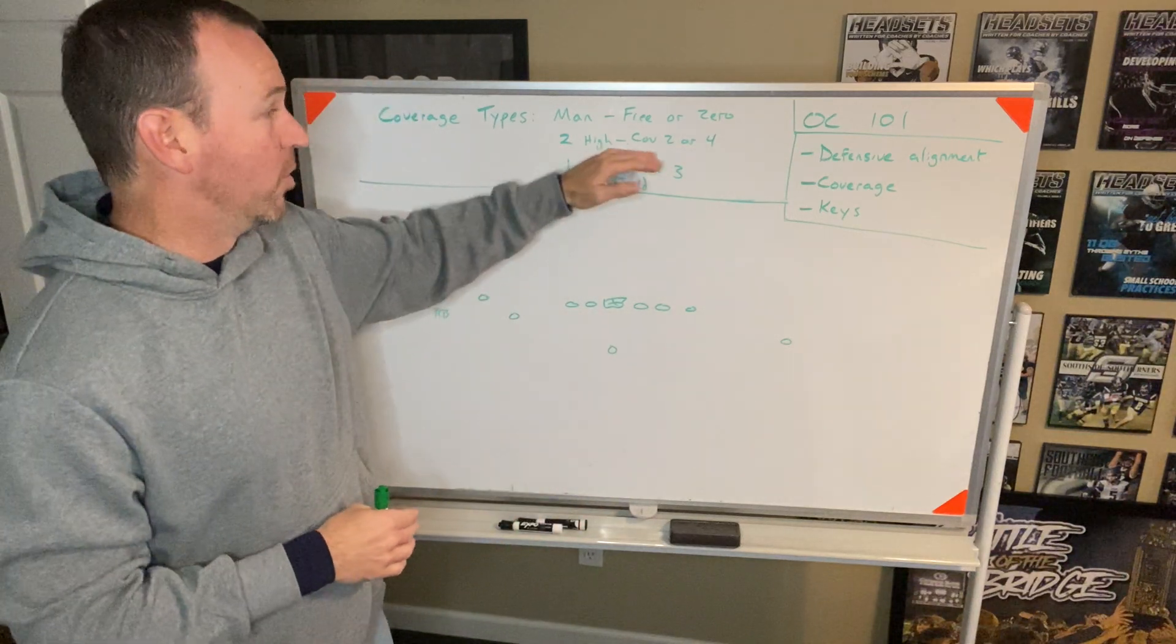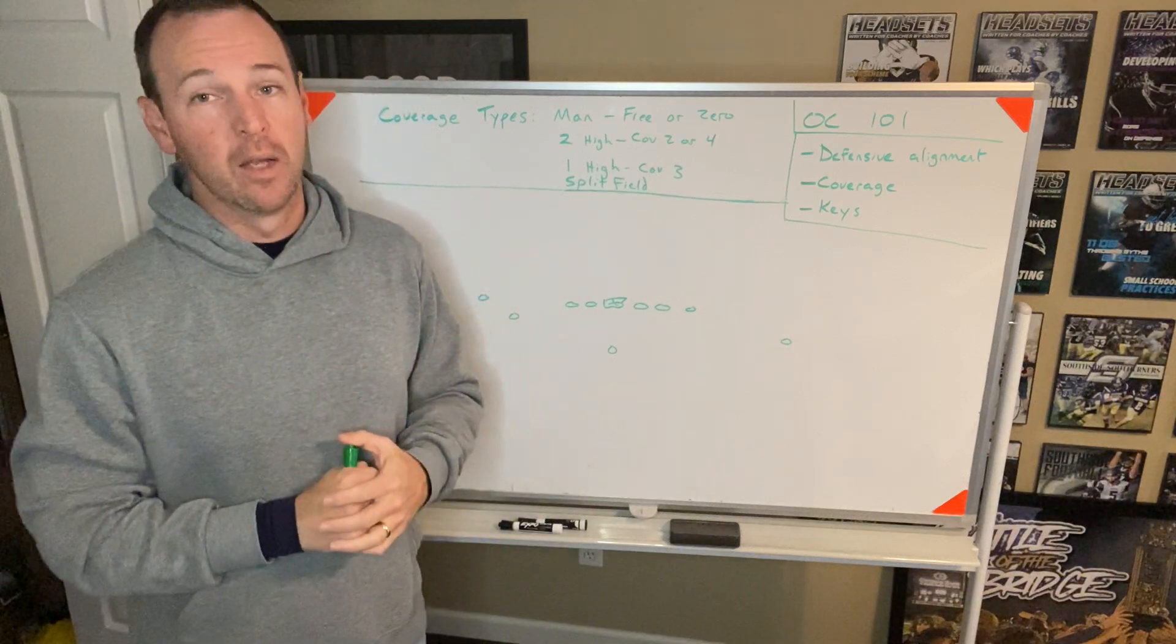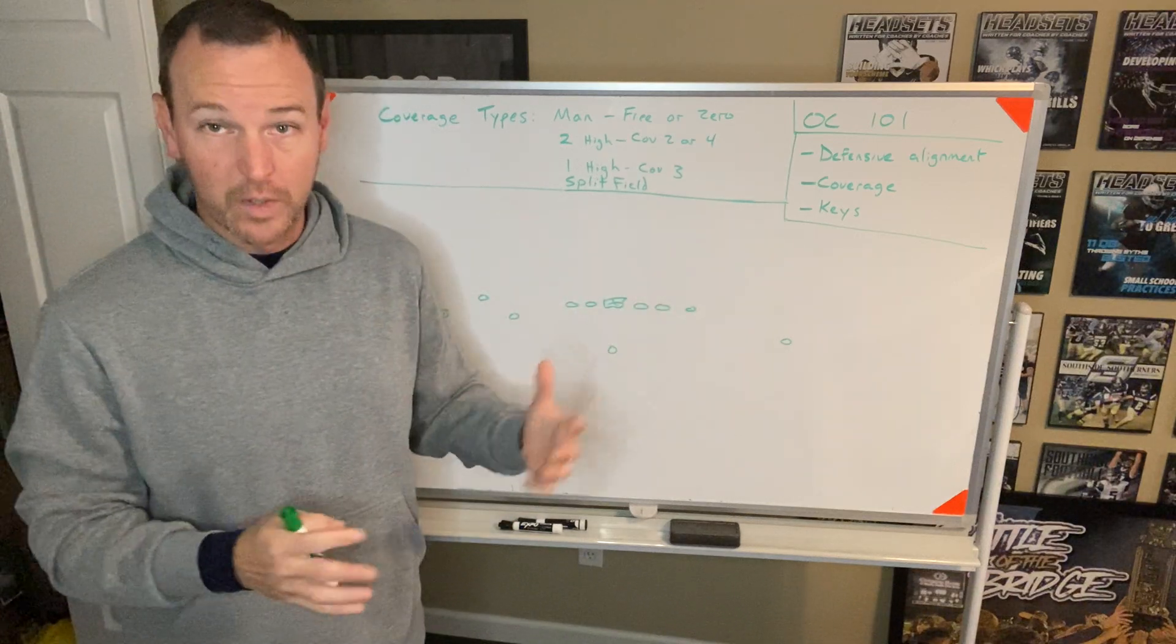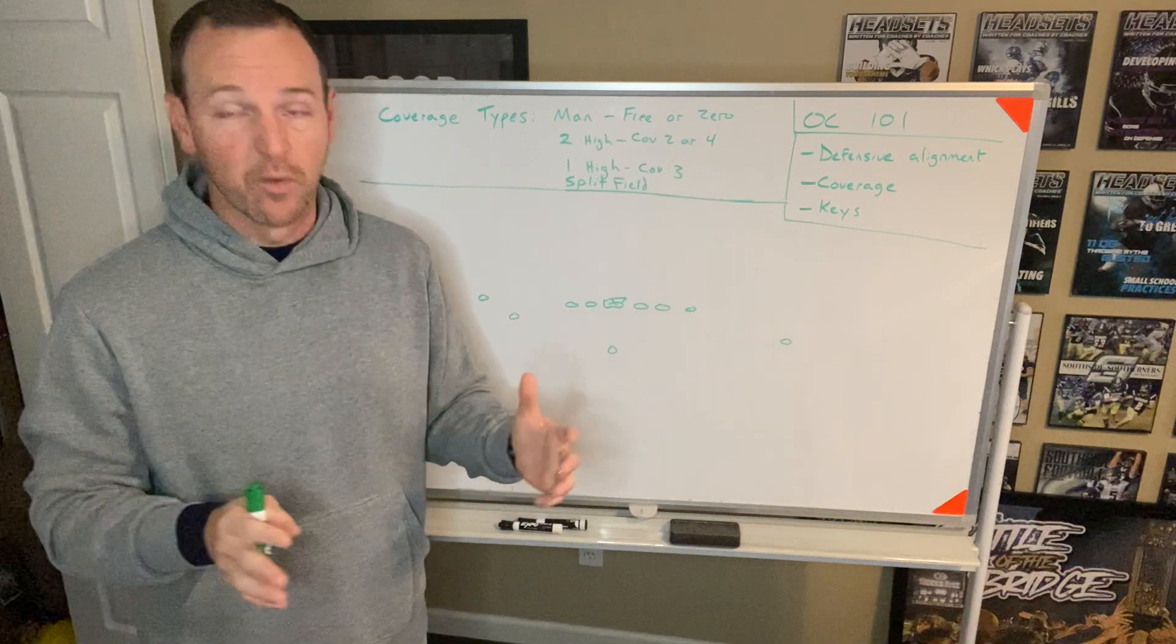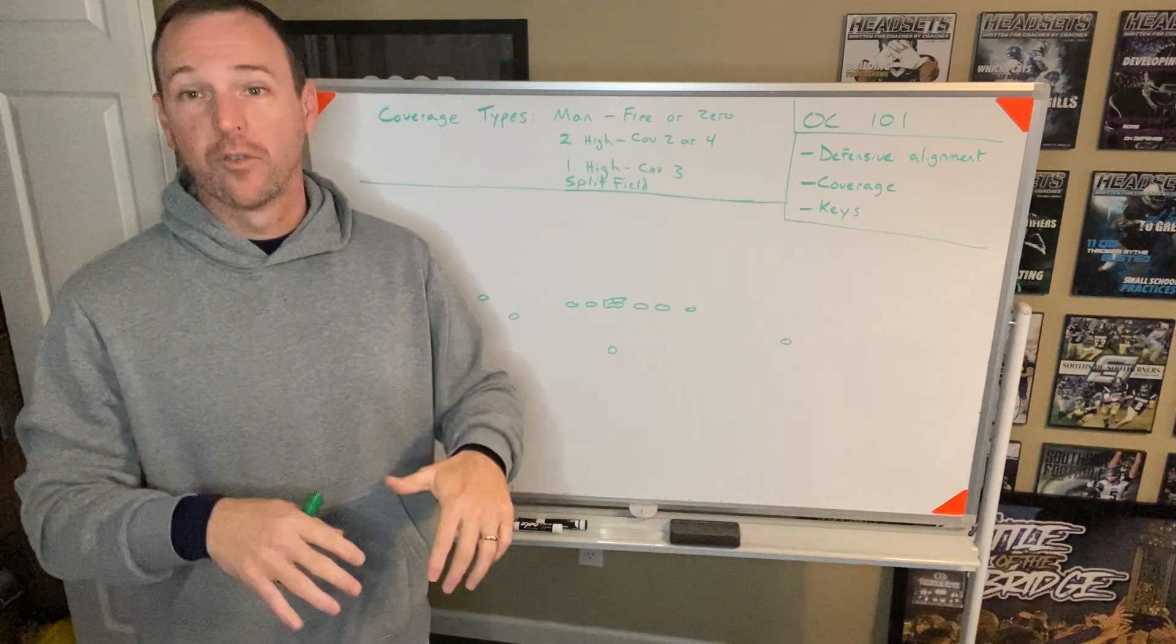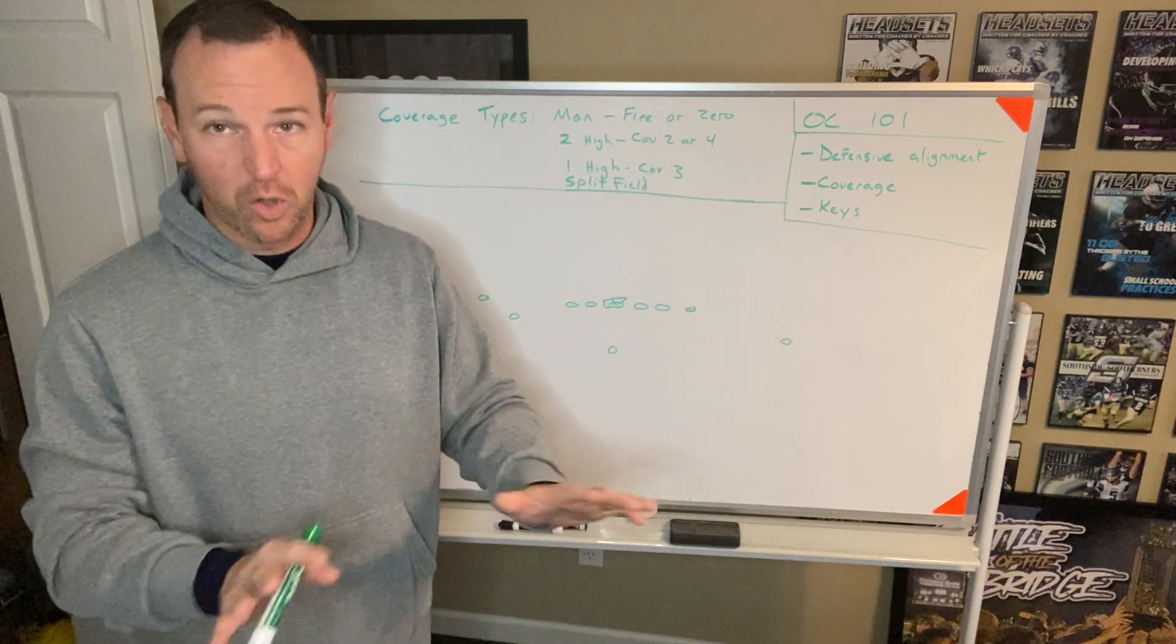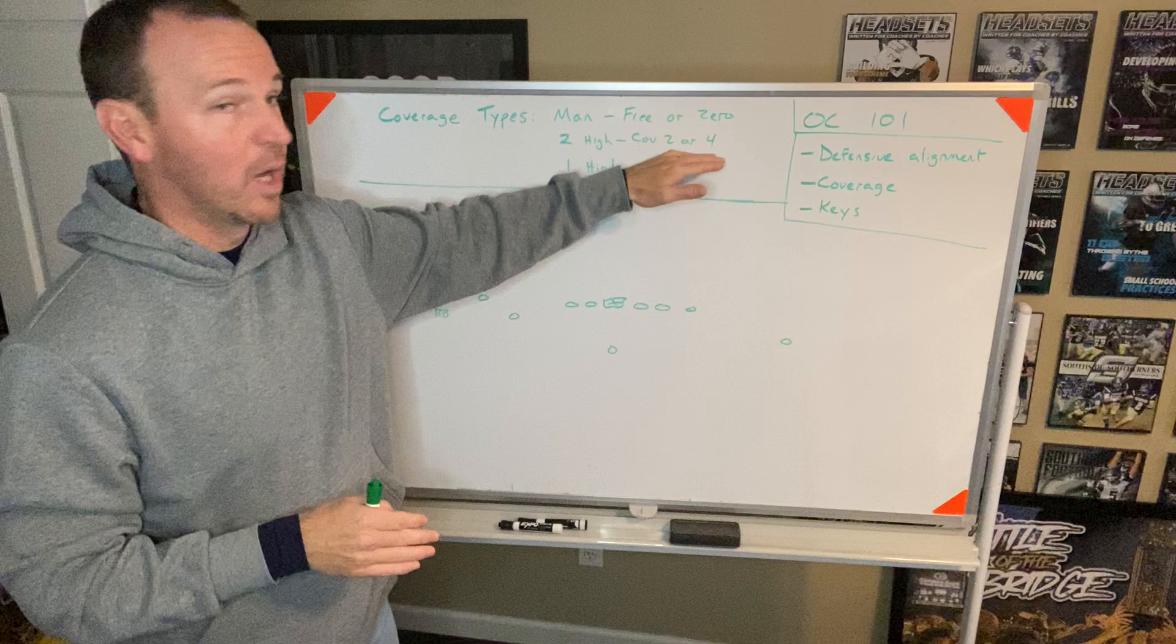The first one is a two-high look, where basically there are two safeties up top and there are two corners out wide. Of course, there's underneath coverage as well with it, but essentially they're running some type of flavor where two guys are responsible for deep, two guys are responsible for the flats or kind of hook curl-ish area, depending on what they're in, either a cover two or a cover four.